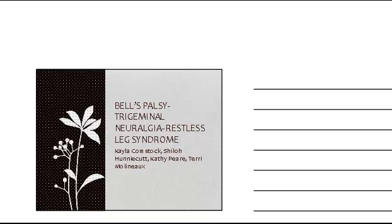Today we're going to start talking about Bell's Palsy, which is an acute paralysis of cranial nerve 7. You can remember that when you do your assessment of patients, because we're going to ask those patients to wrinkle their forehead, lift their eyebrows, and puff their cheeks out. Those are the motor components you check when you have a facial paralysis. It can affect cranial nerves 5 and 7, but for most palsies, you're looking at cranial nerve 7.